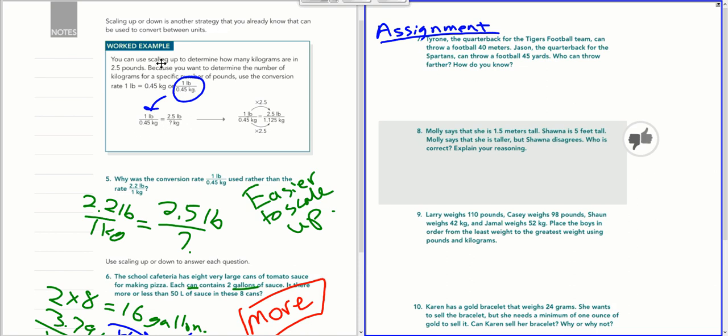Then we're going to place this 2.5 pounds on the top because notice this is pounds, this is pounds, and this is going to be kilograms once we figure out the answer. So we are going to scale up. We're going to multiply by 2.5 to get our 2.5 pounds, and we need to do that to the bottom. So 0.45 times 2.5 is 1.125 kilograms. So the answer would be 1 and 125 thousandths of a kilogram.